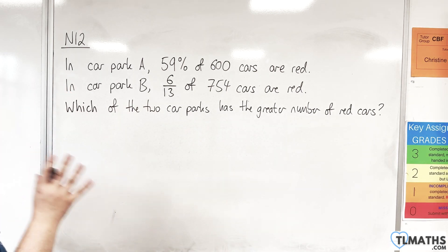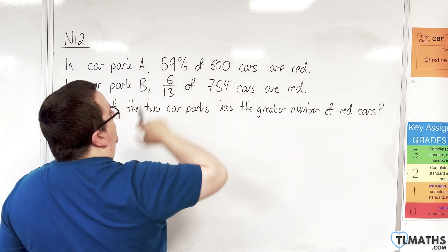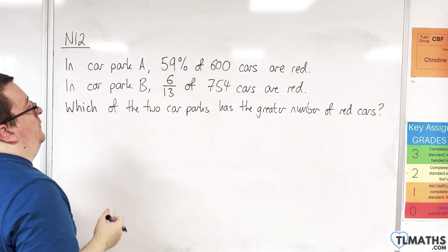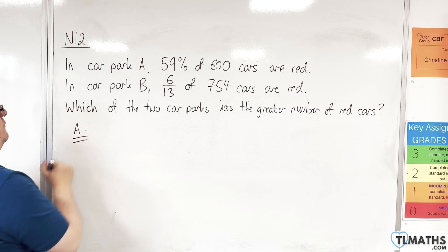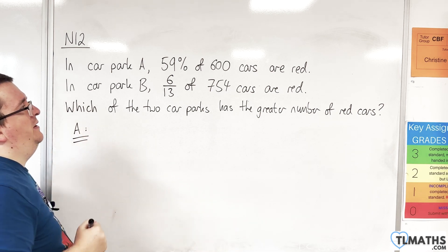I need to calculate 59% of 600, and I need to calculate 6/13 of 754. Let's go with car park A first, 59% of 600.